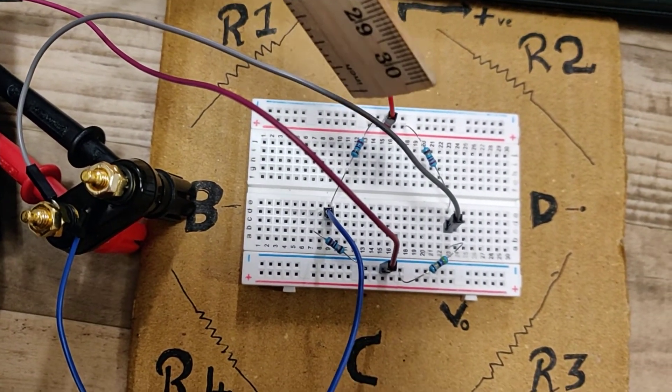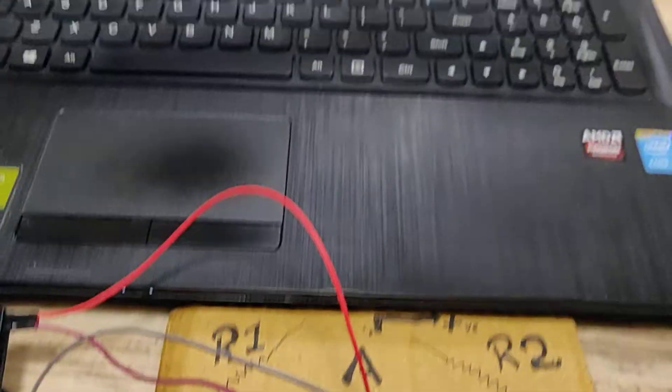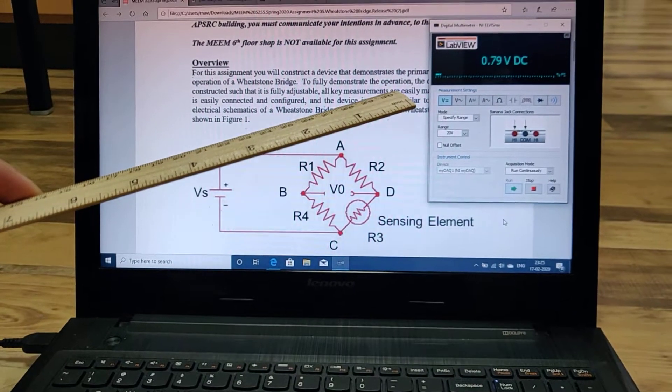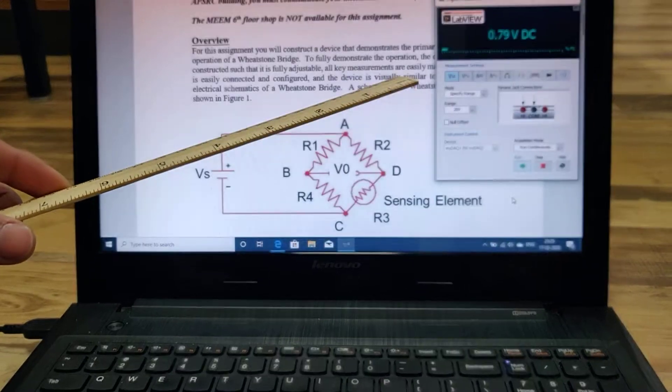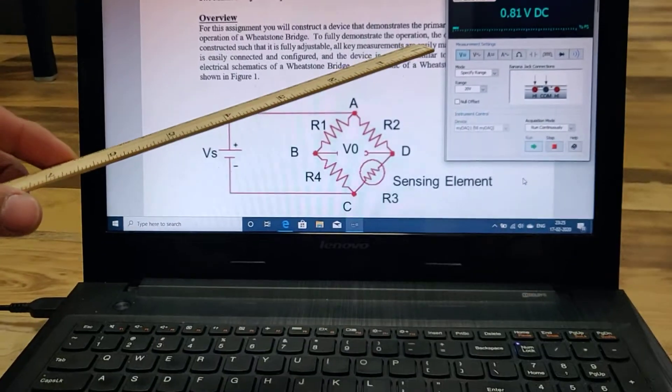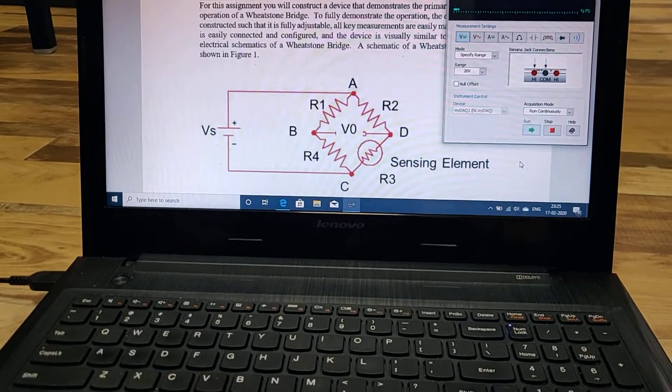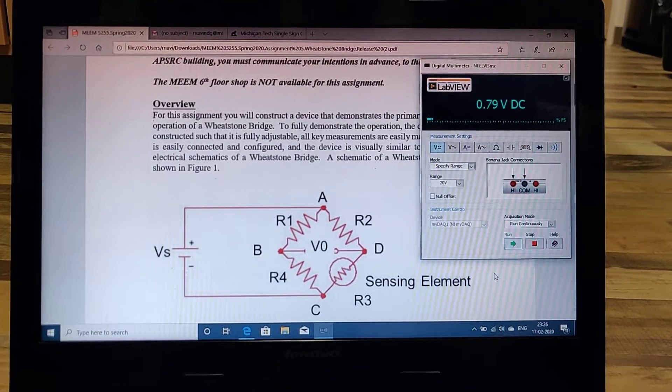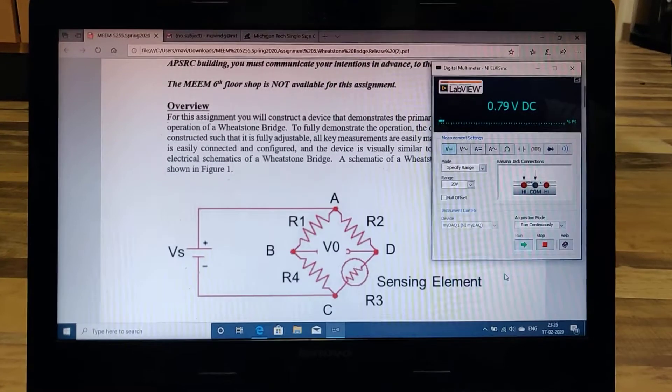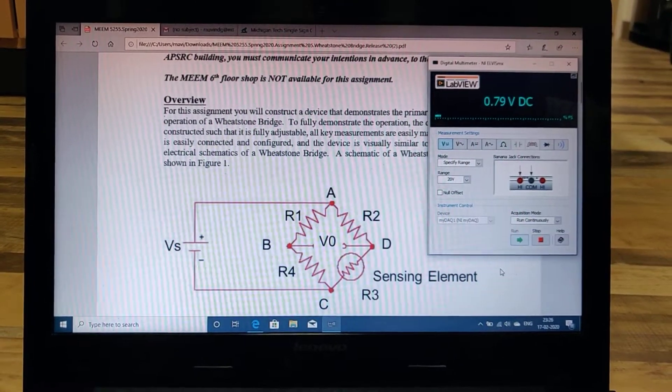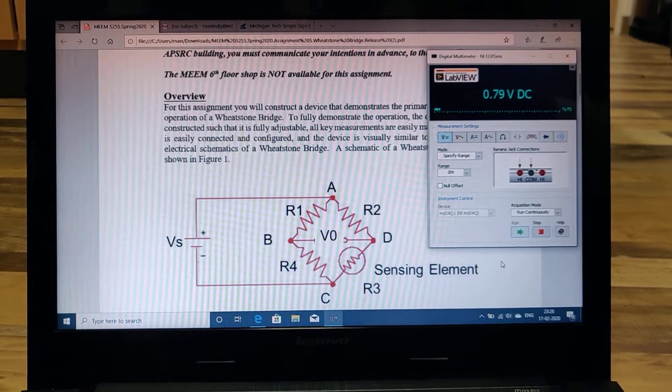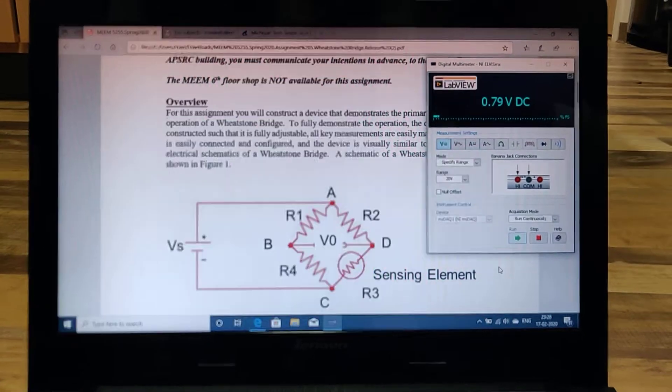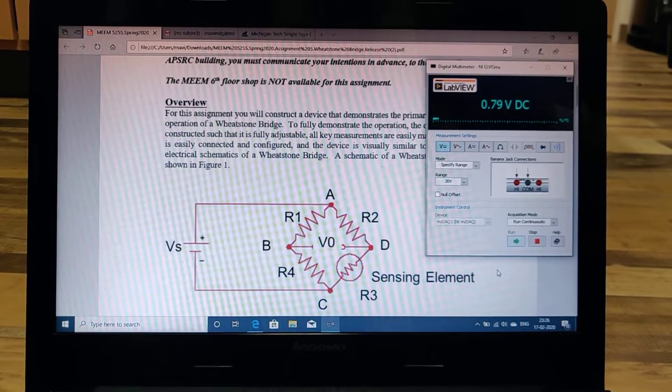This difference will be shown in the given MIDAT app. The difference V0 is 0.79 volts. There is some fluctuation but now the reading is stable at 0.79 and we are going to take this as our reading.